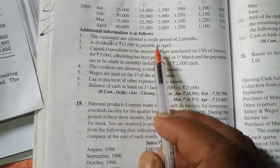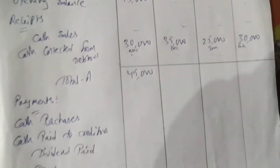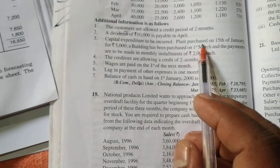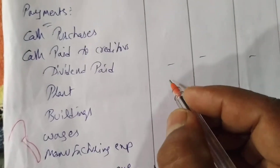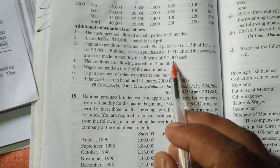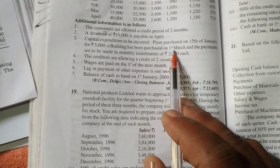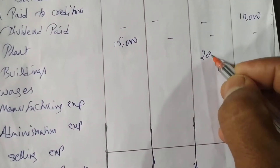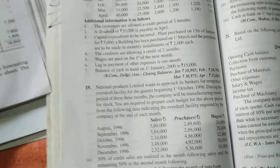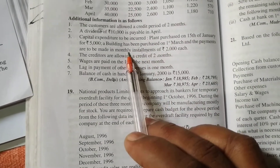A dividend of 10,000 is payable in April, so we enter 10,000 only in the month of April. For capital expenditure, plant and machinery of 55,000 is paid in January, so we enter 55,000 in front of plant in January. The building was purchased on 1st March, with monthly installments starting March — so we enter the installment in March and April.